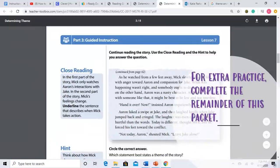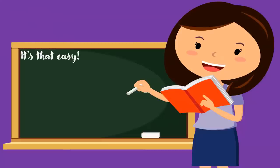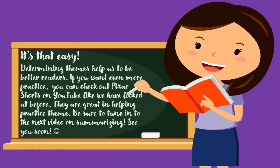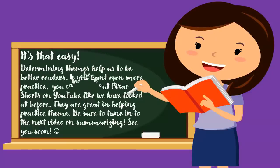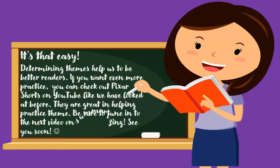Now it's time for you to get some extra practice. You can complete the extra practice in the remainder of this packet that you can find inside your Google Classroom. Determining themes helps us to be better readers. If you want even more practice, you can check out Pixar shorts on YouTube, like we've looked at before — both in class and in one of the previous videos — they're great for practicing theme. Be sure to tune in next week for the video on summarizing. See you soon!